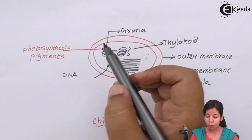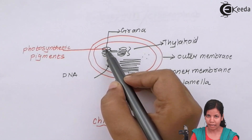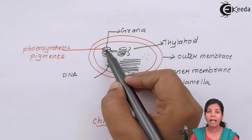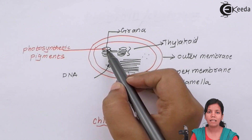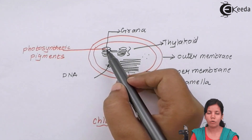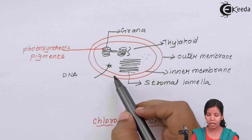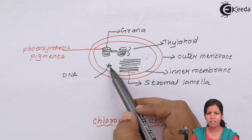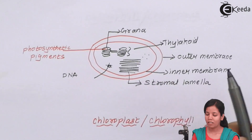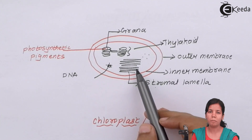Inside grana, there are photosynthetic pigments — chlorophyll A, B, carotenoids, and xanthophyll — and these photosynthetic pigments help in the process of photosynthesis. So saying photosynthesis takes place in photosynthetic pigments would be a correct statement. Along with that, chloroplast has DNA, the genetic material, and stromal laminae, the liquid that holds down the chloroplast material.